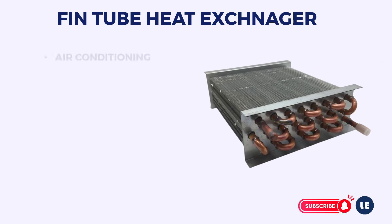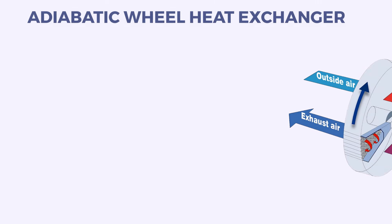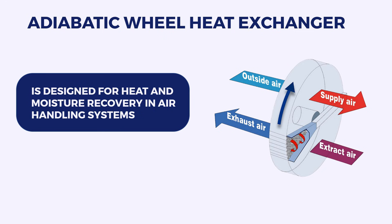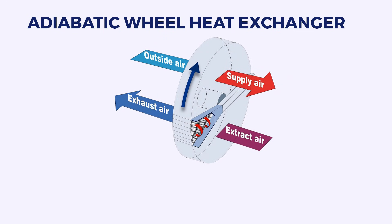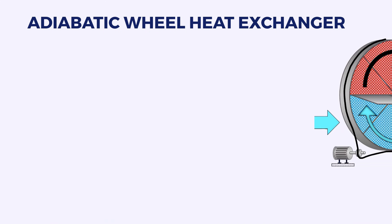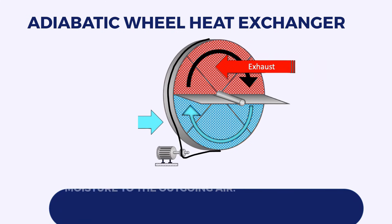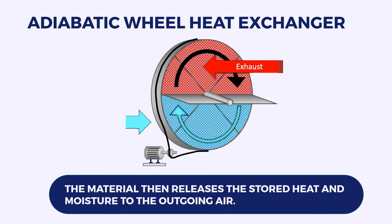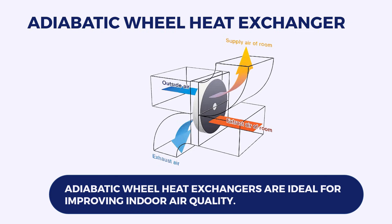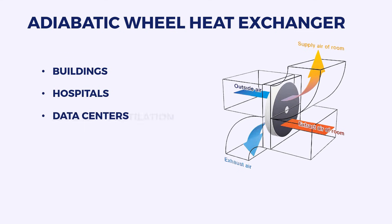Finned tube heat exchangers are used in air conditioning, aerospace, and refrigeration systems. Adiabatic Wheel Heat Exchanger. An adiabatic wheel heat exchanger is designed for heat and moisture recovery in air handling systems. It consists of a rotating wheel with hygroscopic material. As air passes through the wheel, heat and moisture are transferred to the wheel's material, which then releases the stored heat and moisture to the outgoing air. These are ideal for improving indoor air quality and are used in buildings, hospitals, and data centers for energy-efficient ventilation.